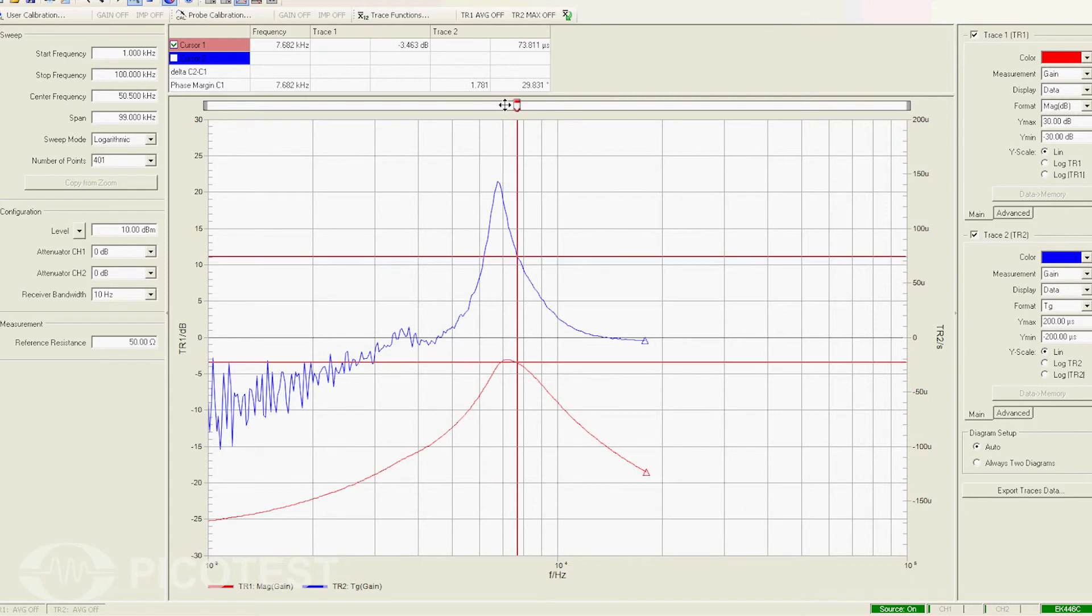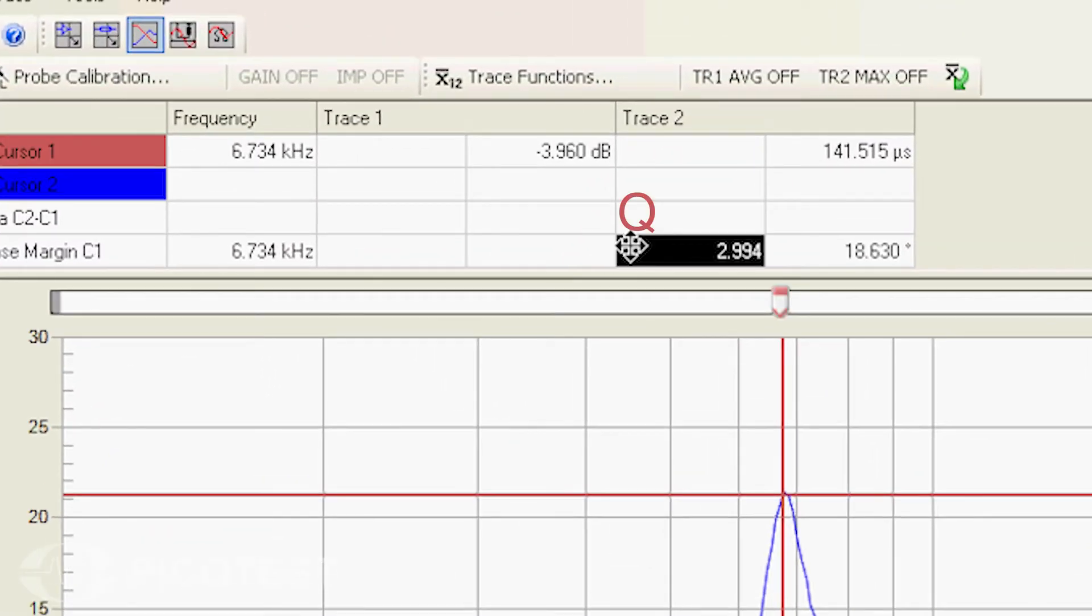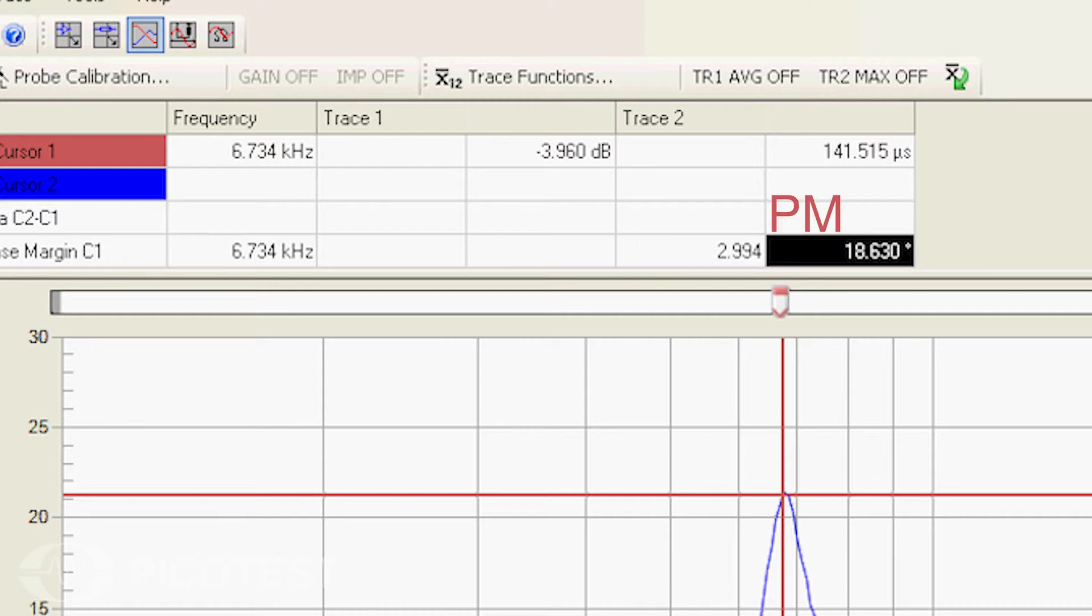At this frequency, that translates to about 19 degrees of phase margin. Even small load changes in a system with this level of instability would have serious oscillations in its output voltage. This could cause potential problems downstream in the system.